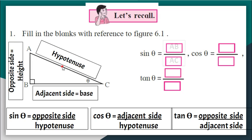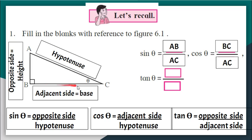Okay, let's see the answers now. Sin theta is ab upon ac. Cos theta is bc which is the adjacent side upon hypotenuse ac. And tan theta is opposite side ab divided by the adjacent side bc. So this is the quick revision of sin cos theta.